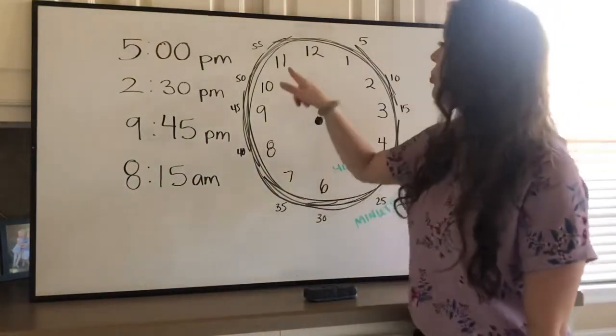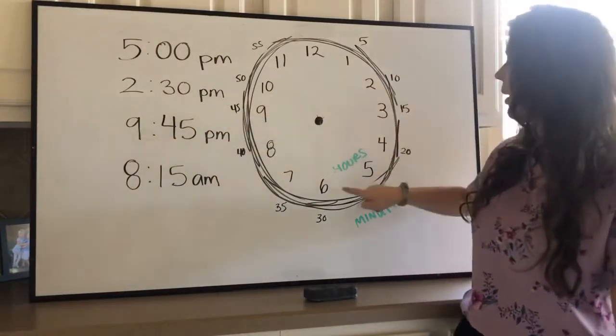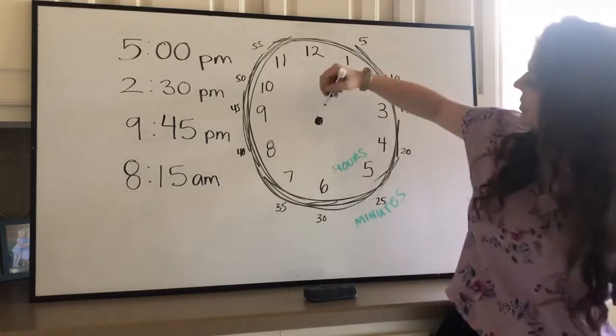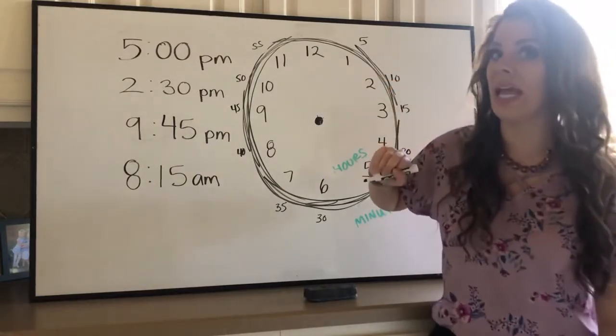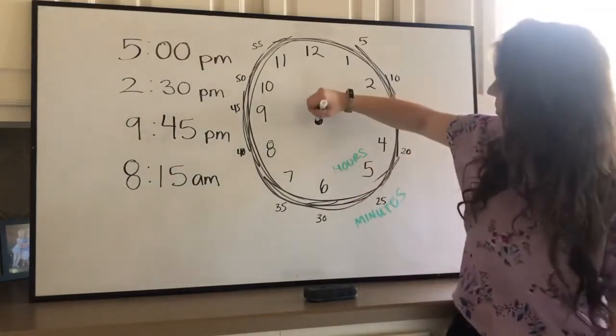Our hour number would be where? Nine, where's our nine? Oh, there he is. So we'd have a small hand pointing to the nine. Yeah, for hours, it would just be the small hand.